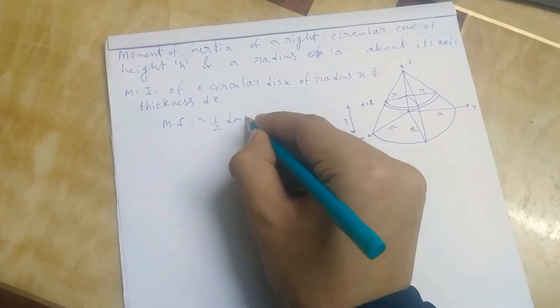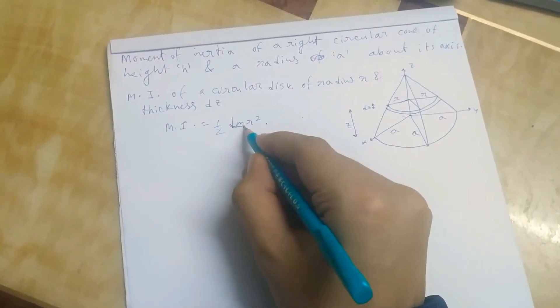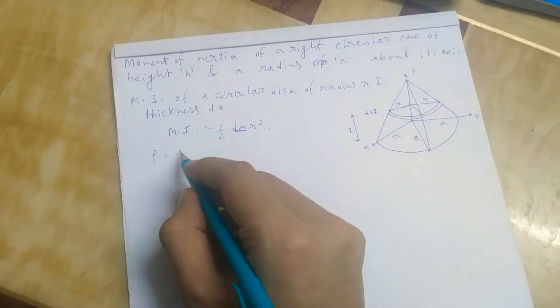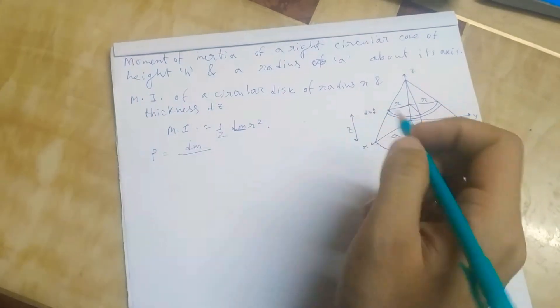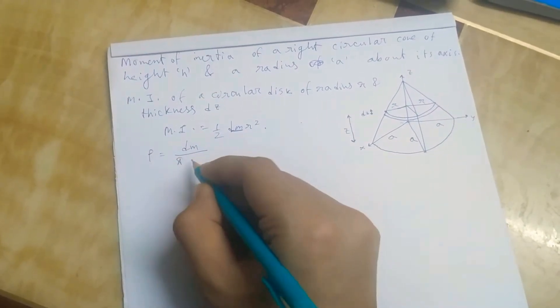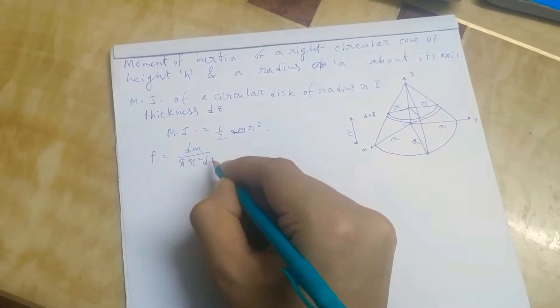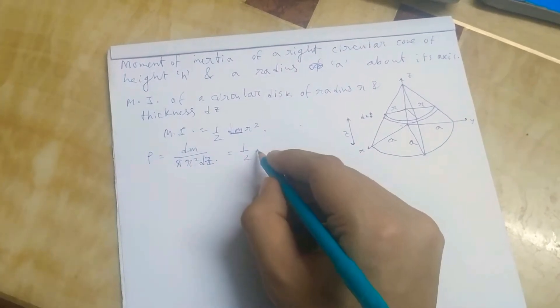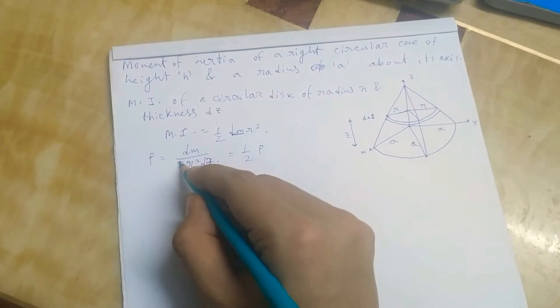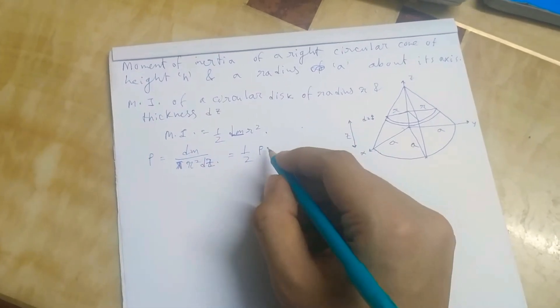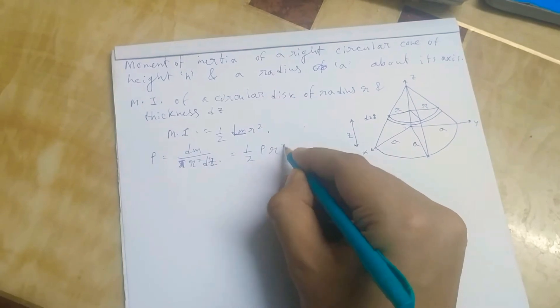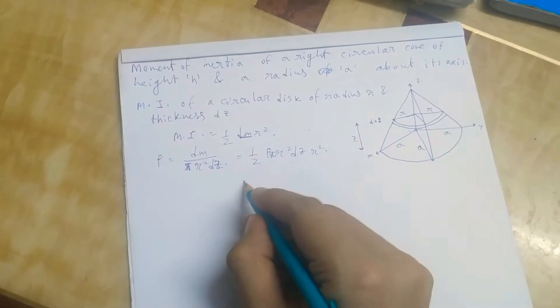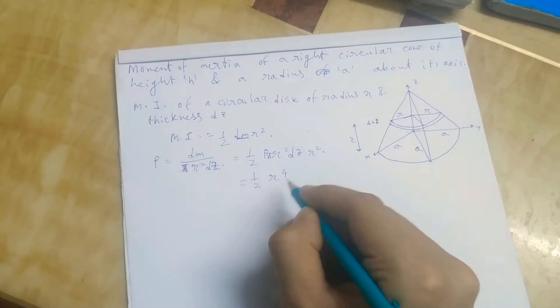Now we have to calculate this dm. Let us consider that rho is mass per unit volume. So dm will be, we can write that, you can transform dm with this.